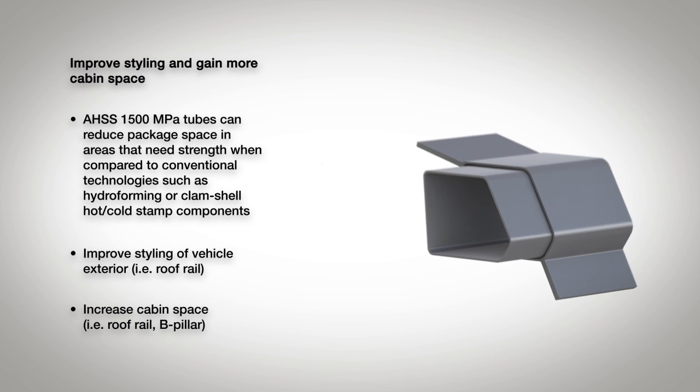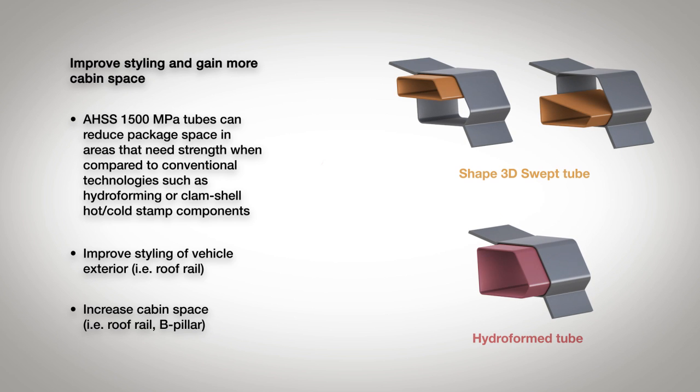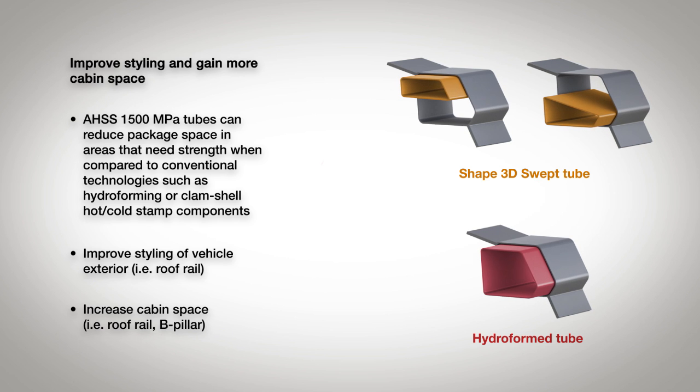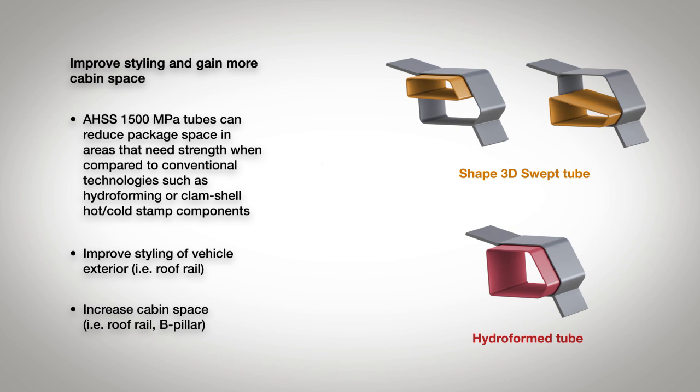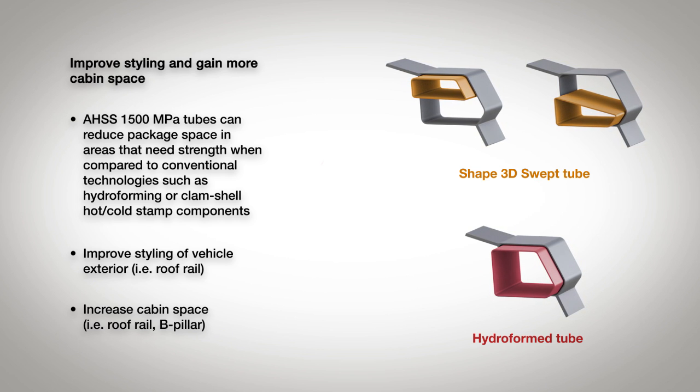Shape roll formed advanced high strength steel parts up to 1700 megapascals can reduce package space in areas that require strength compared to conventional technologies. Both the styling and cabin space can be improved with smaller, stronger roll formed parts.